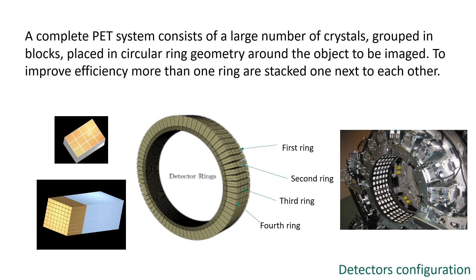A complete PET system consists of a large number of crystals grouped in blocks placed in a circular ring geometry around the patient to be imaged. To improve efficiency, more than one ring are stacked next to each other, and the total axial field of view depends on the number of detector rings in the scanner. The scanner model can be scaled with different numbers of rings.